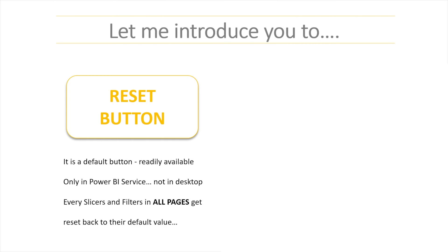In this video, I'd like to introduce you to two buttons. The first one is a reset button that you can find in Power BI service, and the second one is a clear all filter button that you can create in Power BI desktop. A reset button is a default button which is readily available but only in Power BI service and not in Power BI desktop. When you click this button, every slicer and filter in all pages gets reset back to their default value.